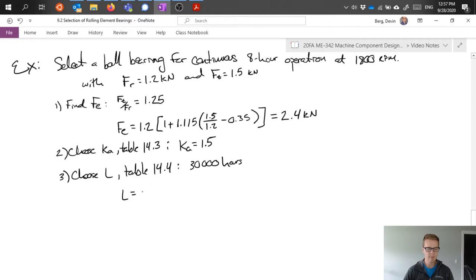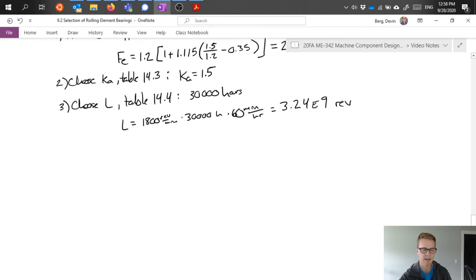So from that, because life is going to be specified in number of cycles, we can go ahead and calculate that based on our RPM. We'll multiply that times 30,000 hours times 60 minutes per hour. And from this, we're going to get 3.24 times 10 to the ninth revolutions as our expected life of our bearing, or just let's say desired life of our bearing.